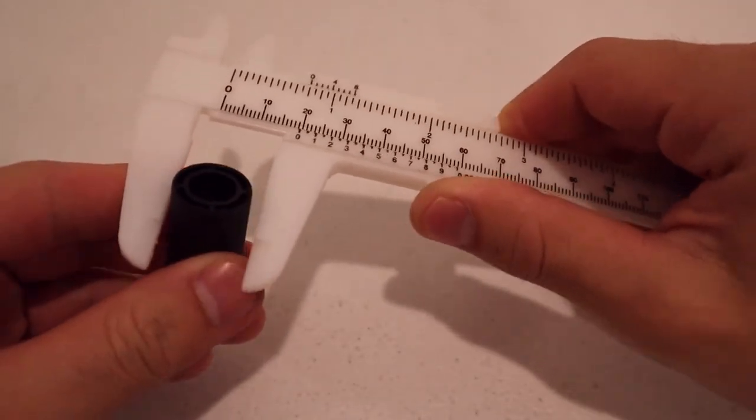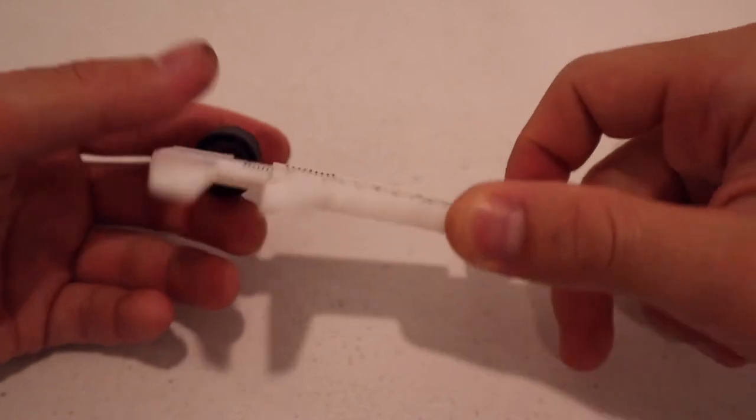To measure an internal width, the fingers on the opposite side of the jaws may be used.